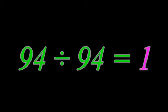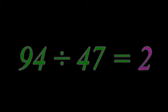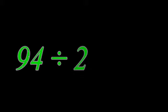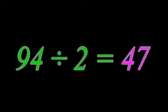94 divided by 94 equals 1. 94 divided by 47 equals 2. 94 divided by 2 equals 47. 94 divided by 1 equals 94. 94 divided by 0 equals 0.